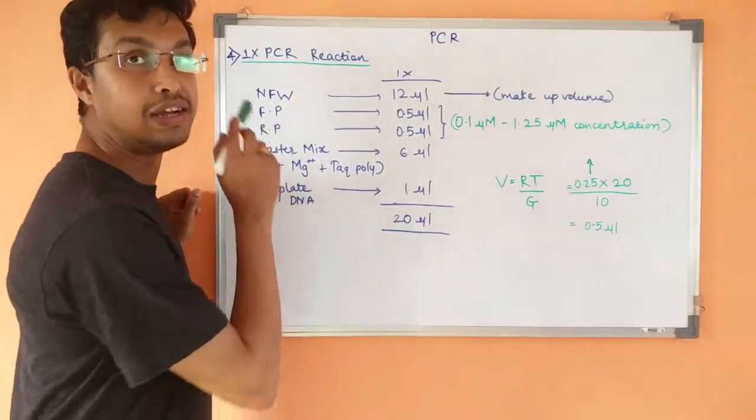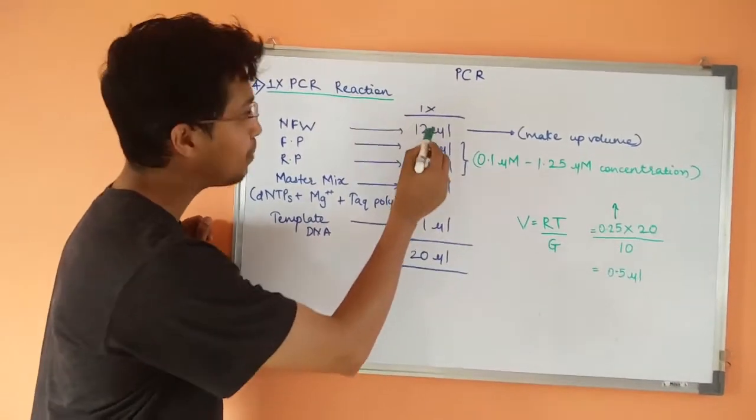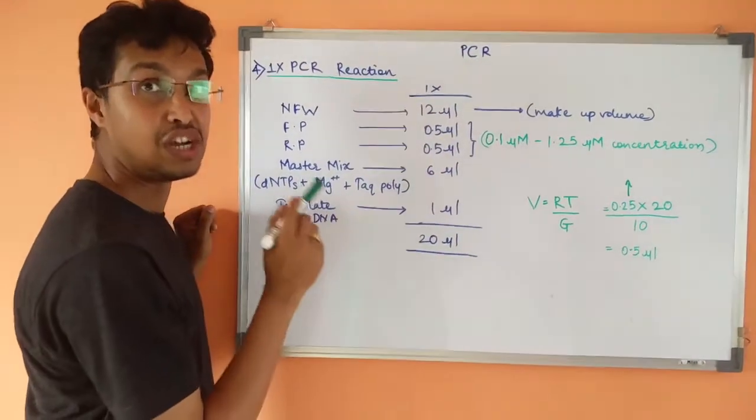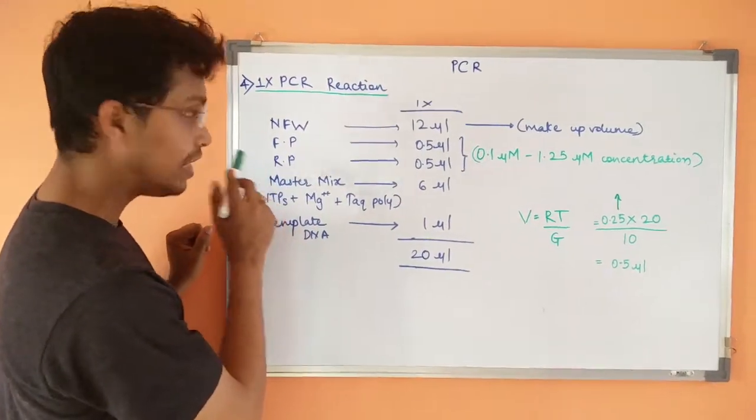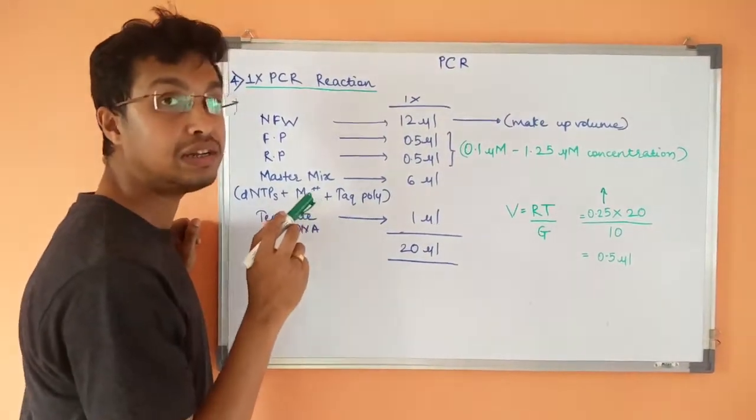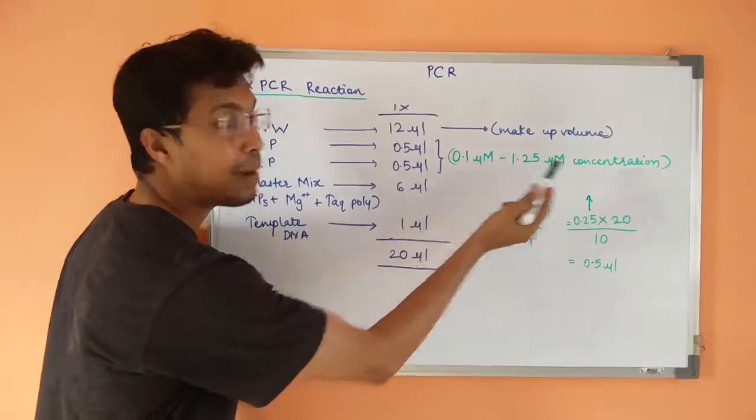To start with nuclease-free water, we are going to add first because it is having maximum volume. I am going to add 12 µL of nuclease-free water. After that, I am going to add forward primer and reverse primer. The concentration will range from 0.1 micromolar to 1.25 micromolar.